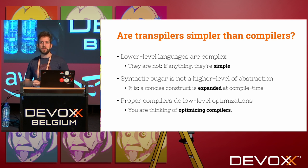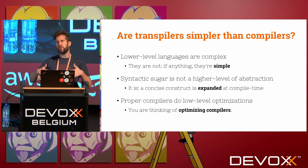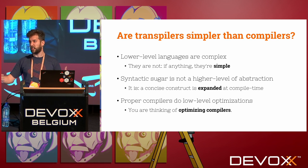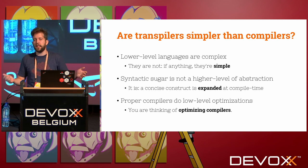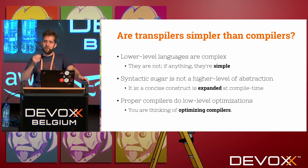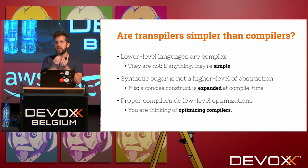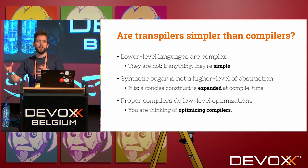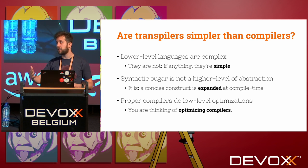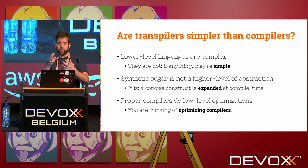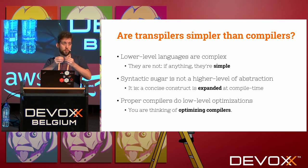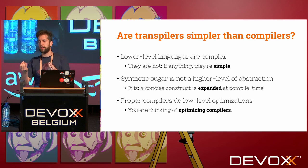Some people say 'my transpiler is just desugaring syntactic sugar, so it's not at a higher level of abstraction.' I disagree. The ability to desugar some syntax into more code is exactly the job a compiler does. In fact, more advanced languages support macros, which let you plug into the compiler and expand a construct into more code — that's a piece of a compiler as well.